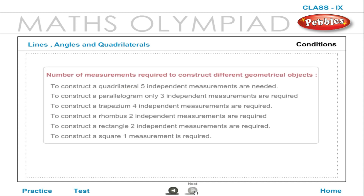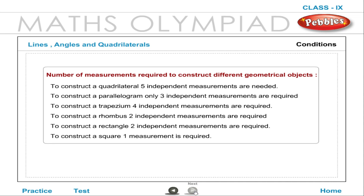The number of measurements required to construct different geometrical objects: To construct a quadrilateral, five independent measurements are needed. To construct a parallelogram, three independent measurements are required. To construct a trapezium, four independent measurements are required. To construct a rhombus, two independent measurements are required. To construct a rectangle, two independent measurements are required. To construct a square, one measurement is required.